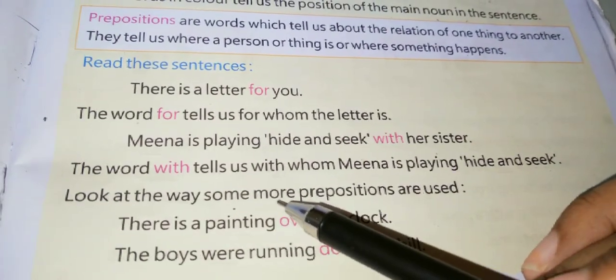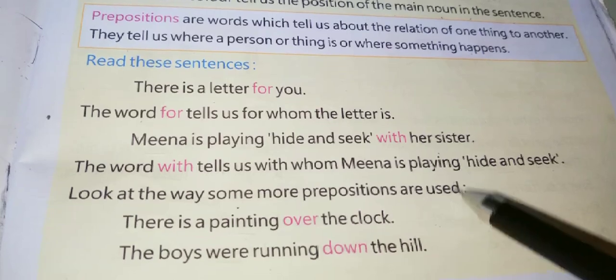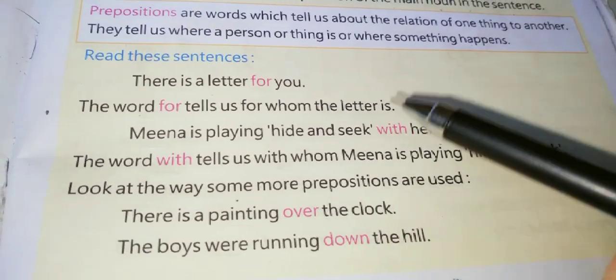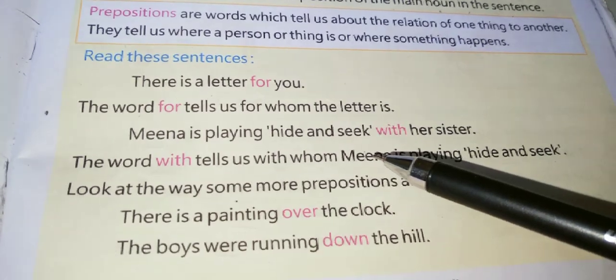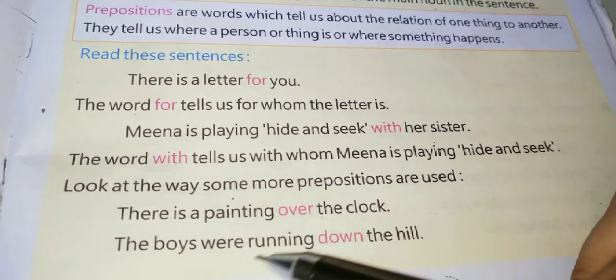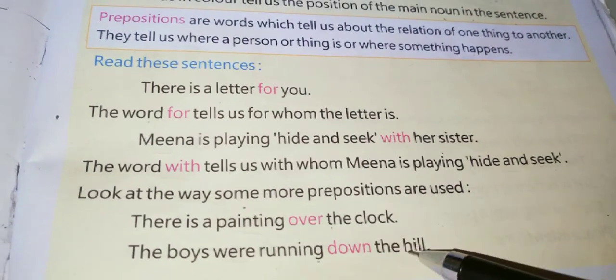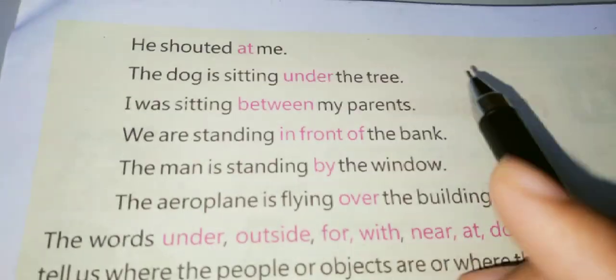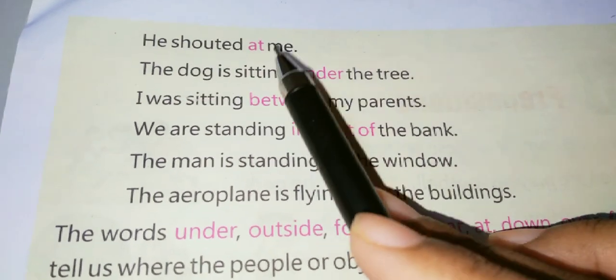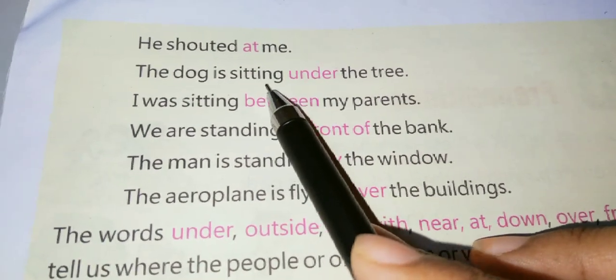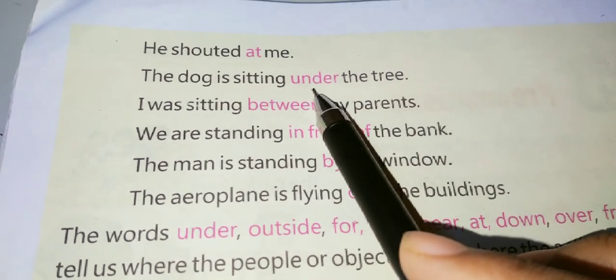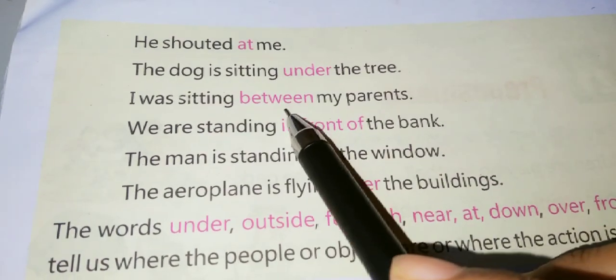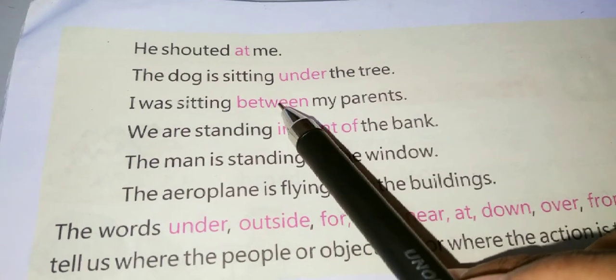Look at the way some more prepositions are used. 'There is a painting over the clock' — it is over the clock, so 'over.' 'The boys were running down the hill' — 'down.' 'He shouted at me' — 'at.' 'The dog is sitting under the tree' — 'under.' 'I was sitting between my parents' — 'between.'